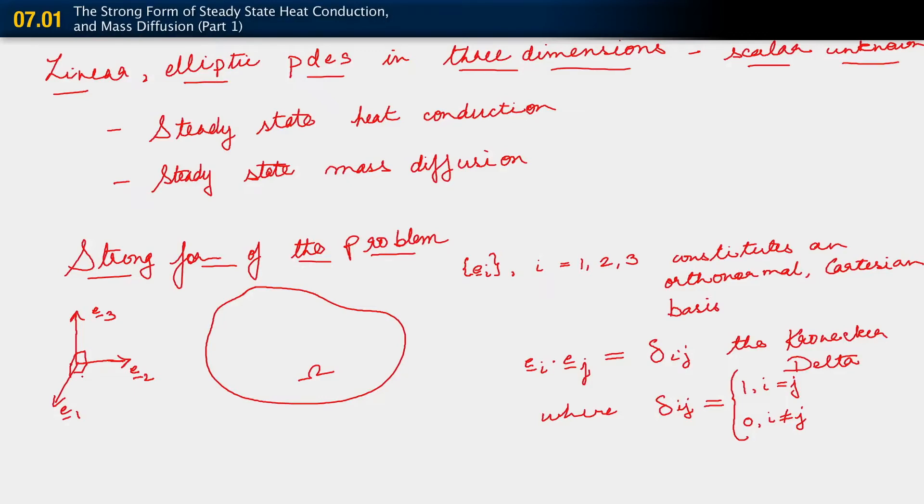Cartesian for our purposes simply means that they are fixed. The basis vectors do not change. They are fixed in space. Let me also just, for the purpose of making this completely obvious, state that we are doing all of this in three-dimensional ambient space. So this is the setting for the problem we want to consider.